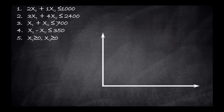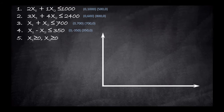Before moving to the grid, I will find the intercept points on the axes to help with graphing. We will use the x-axis for x1 and the y-axis for x2.